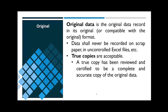Original data is the data record in its original or compatible-with-the-original format. It cannot be recorded on scrap paper or in uncontrolled Excel files, for example. Instead, CGMP data must be recorded in controlled Excel sheets, paginated notebooks, controlled electronic workbooks — anything that has an audit trail and doesn't allow for data to be deleted without documentation and retention of the original data value. True copies are also acceptable as original data. True copies have been reviewed and certified to be a complete and accurate copy of the original data, usually by quality.